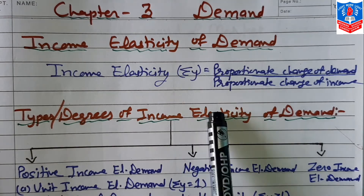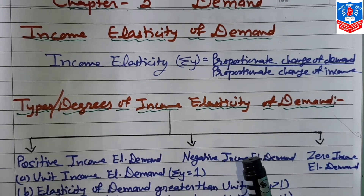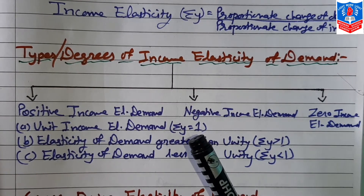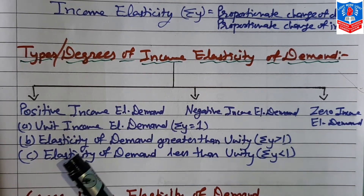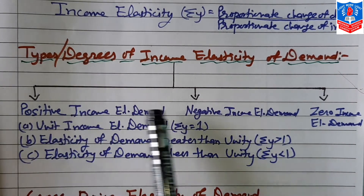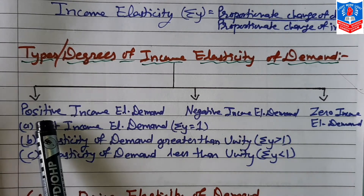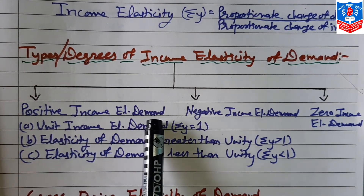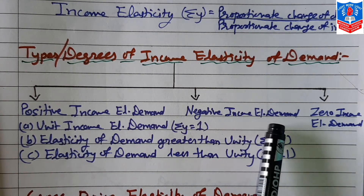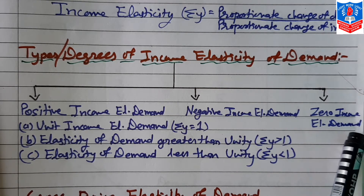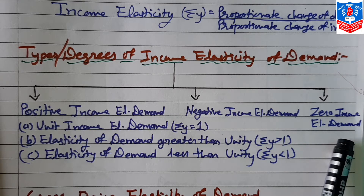What are the types or degrees of income elasticity of demand? There are mainly three types: number one, positive income elasticity of demand; number two, negative income elasticity of demand; and number three, zero income elasticity of demand.